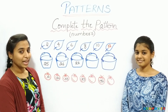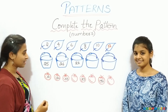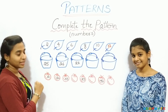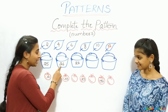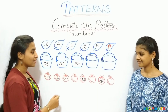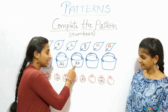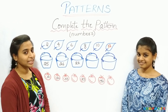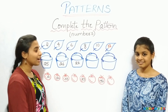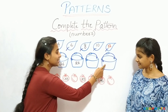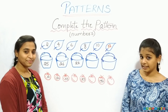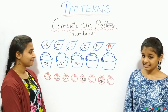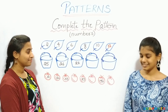Now coming to these buckets: 25 in the bucket, 26 in the bucket, 27 in the bucket. After 27, which numbers will come in these two buckets? 28 and 29. Let us write those two numbers.